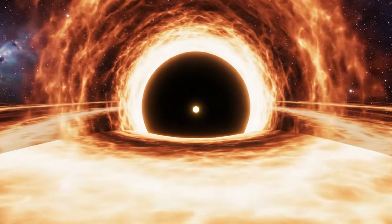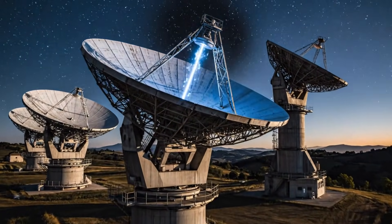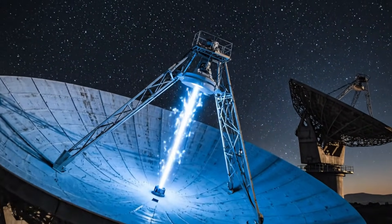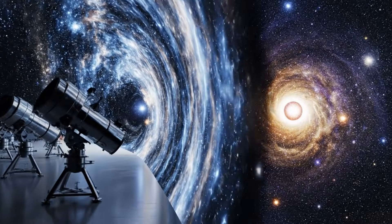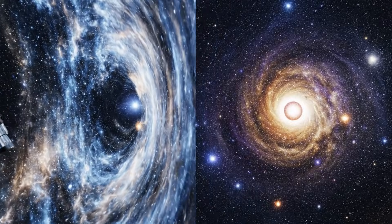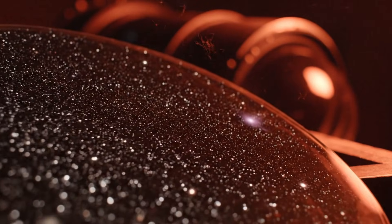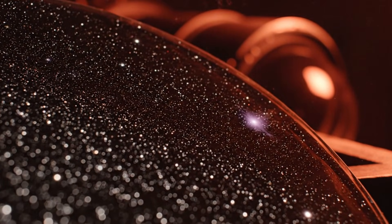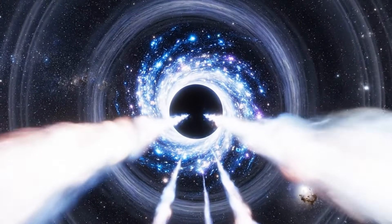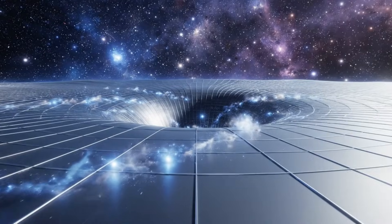When astronomers analyzed the spectrum of Ton 618 more closely, the motion of the gas swirling around its core revealed something almost impossible to grasp. The central black hole appeared to hold a mass roughly 66 billion times that of our sun. The number alone seems abstract until you try to imagine it. If each sun were a single grain of sand, you would need an entire desert just to represent the weight of this one black hole.